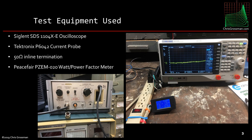The test equipment used will be a Siglent SDS-1104X-E oscilloscope. A Tektronix P6042 current probe, probably built in the 70s, with a 50-ohm line termination in-line with the input to the Siglent oscilloscope, because it does not have 50-ohm inputs and this probe requires a 50-ohm input. And a P-Sphere PZEM watt power factor meter, which you can see here along with the current probe and its box.